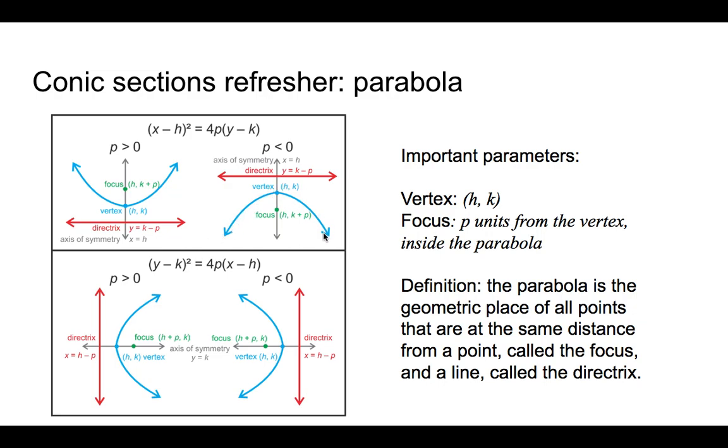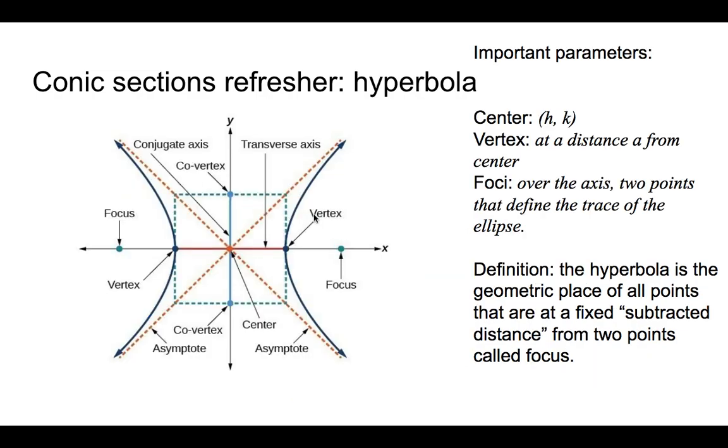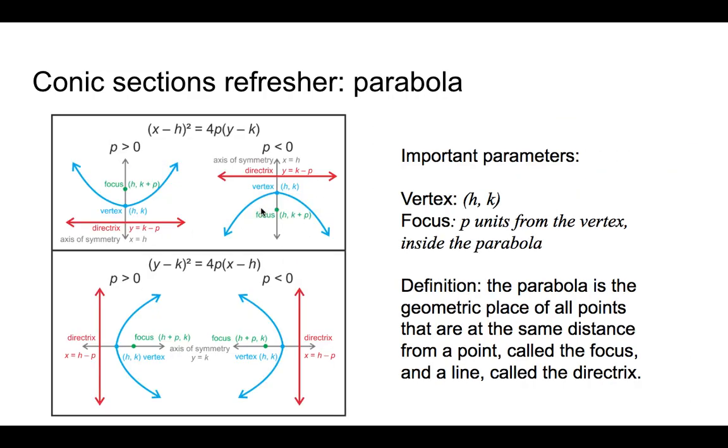You can get it confused with the graph of the hyperbola, but remember that the parabola has only one branch. It's only just this, or this, or this, or this, but it's only one. But in the hyperbola, you have the two of them. Always. Okay? Well, that's it.